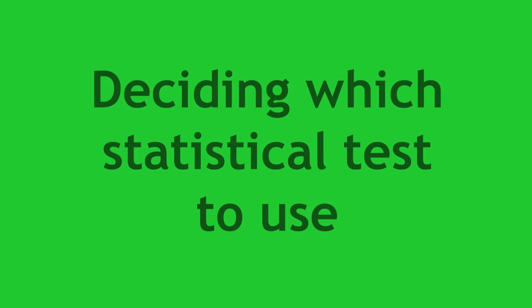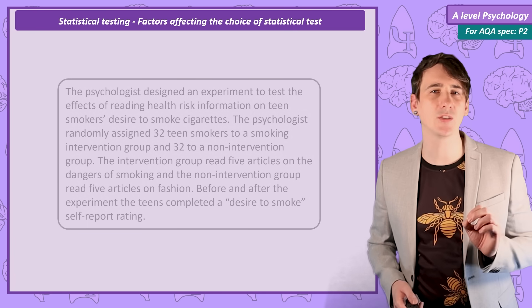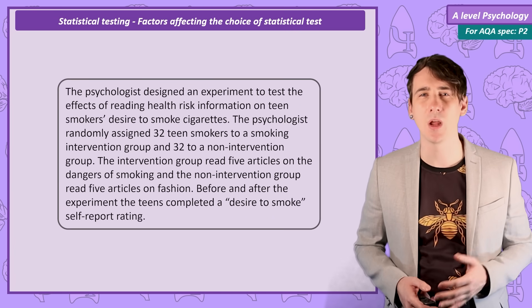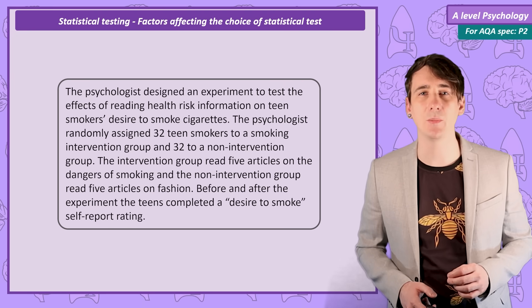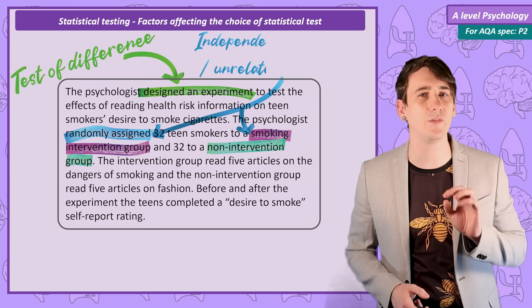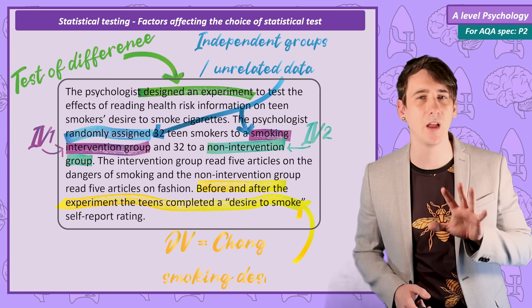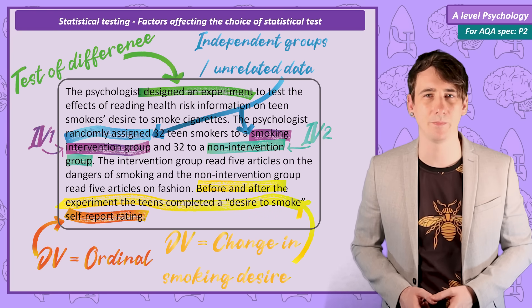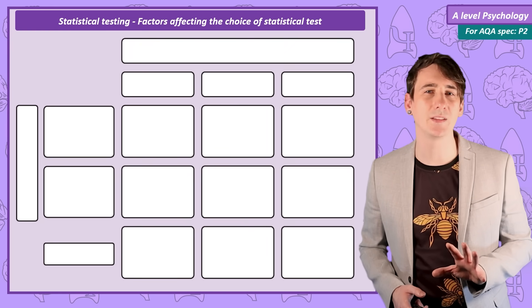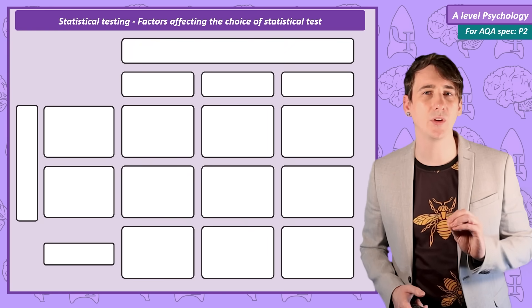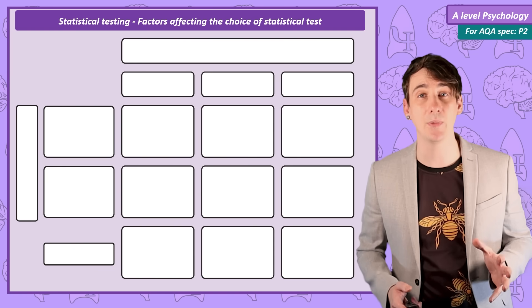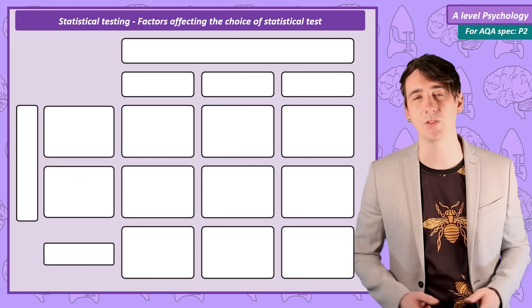Deciding which statistical test to use. In your exam, when a stats question is asked, before the question you're highly likely to see a scenario — what we call a stem. This stem will outline a piece of research and provide you with all the clues you need to figure out which statistical test is needed. You're going to want to grab some paper and fill this table out with me, because this table is how we're going to take all the clues given in the stem, come up with the right statistical test, and justify to the examiner why we've chosen it.